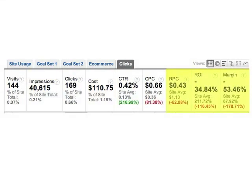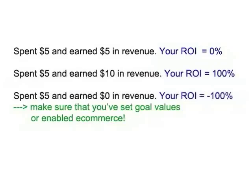Revenue per click, return on investment, and margin can help you assess keyword profitability. For example, ROI is useful because it provides a single metric comparison of how much you spent versus how much you made. An ROI of 0% means that you earned in revenue the same amount of money that you spent. An ROI of 100% means that you spent X and received 2X in revenue.